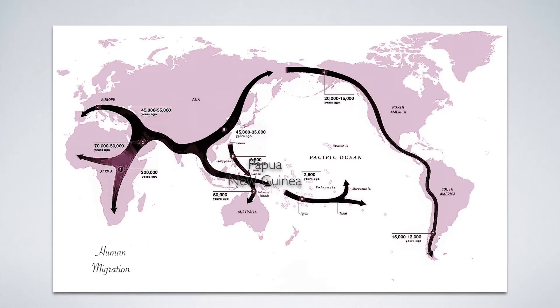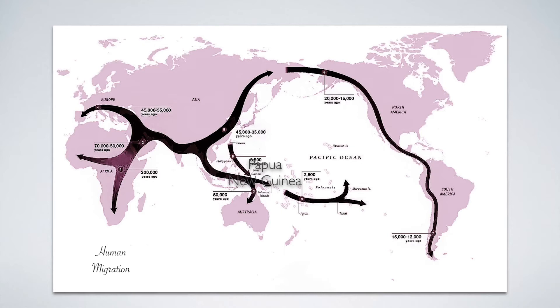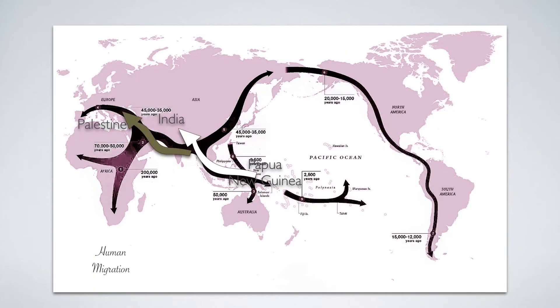It wasn't until much later, as we spread around the world, that people in Indonesia and Papua New Guinea discovered a plant indigenous to the area called sugarcane, whose juice had a certain sweetness. That sugarcane juice was then exported to India, where a technique was developed a couple thousand years ago for evaporating the liquid and leaving crystalline sugar behind. That allowed sugar to become a tradable commodity — solid sugar could now be taken to different parts of the world.